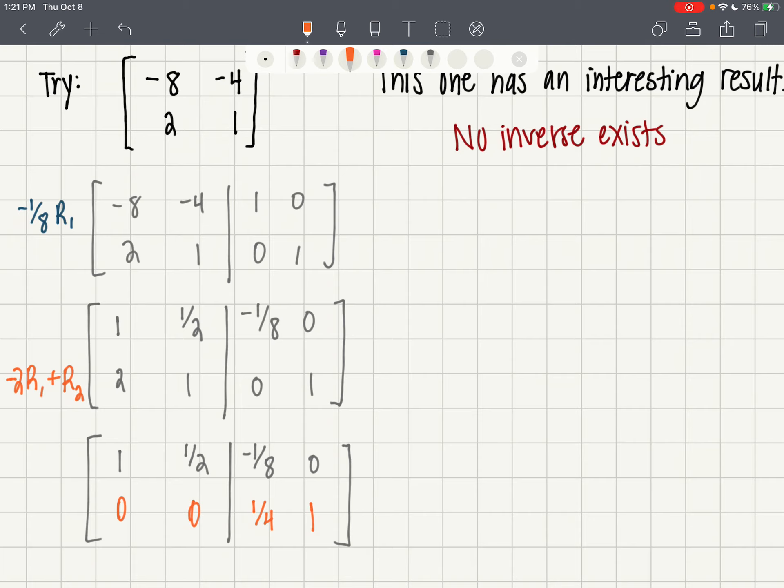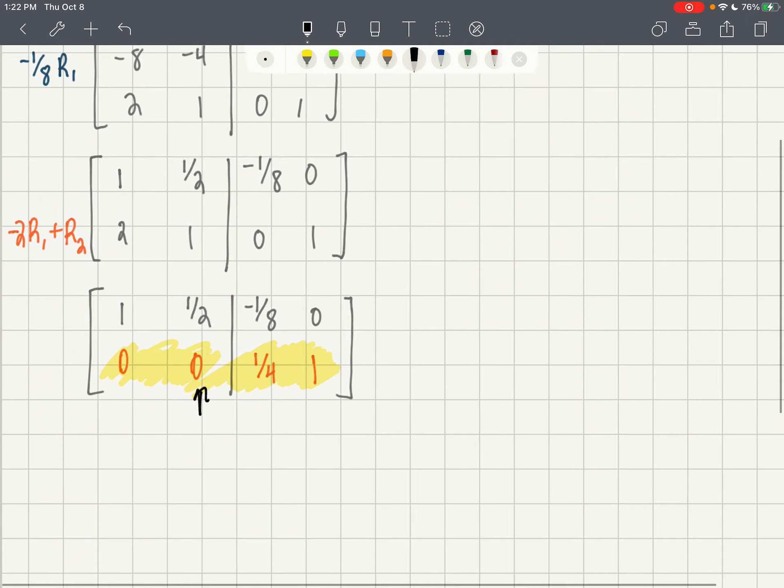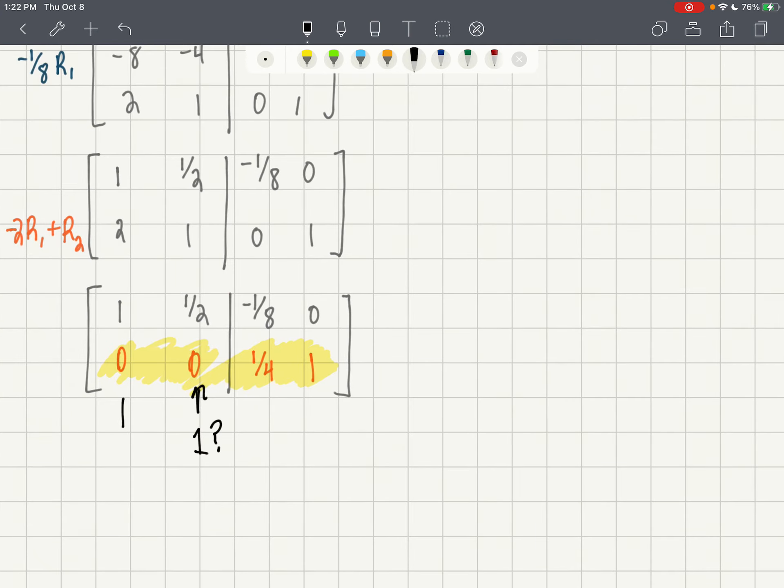So I've got zero, zero here. What the heck does that mean? That means that there's no way that you can get that second value on the right to be a one while the one to its left is a zero. So when you have that, where you've got all zeros across the row, that means that you have no inverse. There's no inverse that's going to exist.